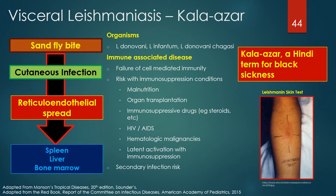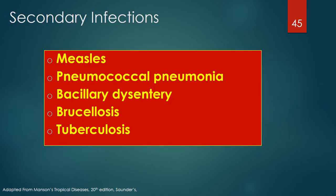Following the infectious bite of a sandfly, a cutaneous infection is established. Amastigotes are then transmitted through the reticuloendothelial system, infecting other organs including the spleen, liver, and bone marrow. Secondary infections often associated with visceral leishmaniasis include measles, pneumococcal pneumonia, bacillary dysentery, brucellosis, and tuberculosis.